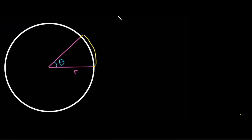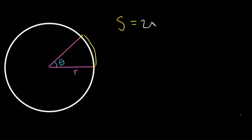Arc length is usually notated as s. So s is equal to arc length. An arc is part of the circumference, so it's a fraction of the circumference. We obviously need to start with our circumference, which would be 2πr. But now we need a fraction.